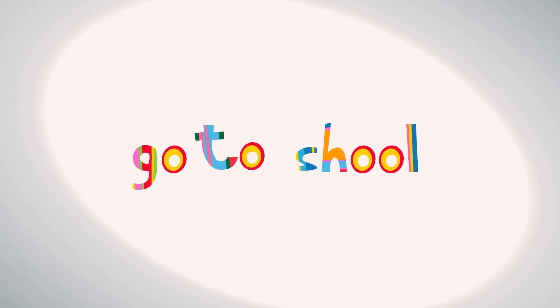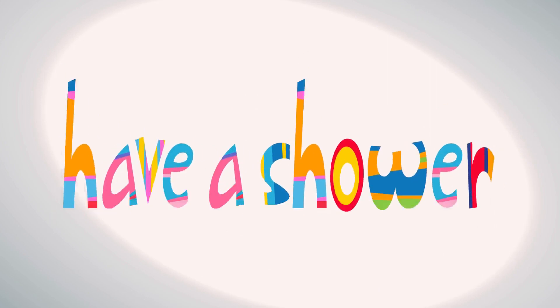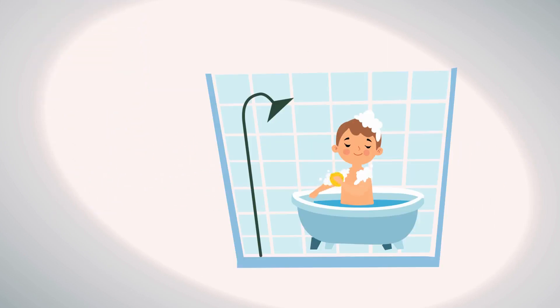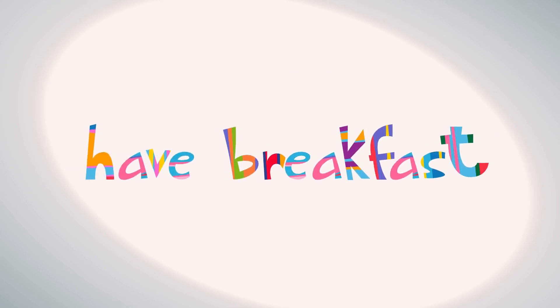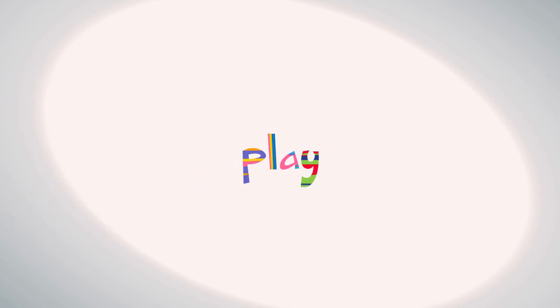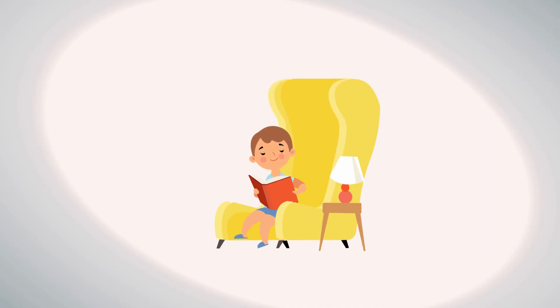Go to school. We go to school every day. Have a shower. I have a shower at 7 o'clock in the morning. Have breakfast. I have an egg, bread with sausage, and a cup of tea for breakfast. Play. After doing my homework, I play football with my friends. Read a book. Before going to bed, I read a book.